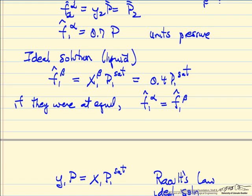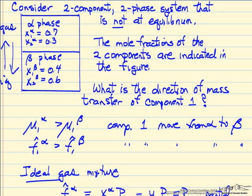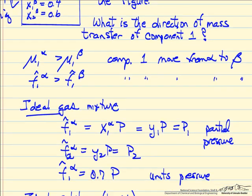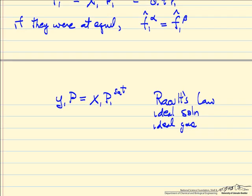In our system, mass transfer will occur — either component one moving from the beta phase to the alpha phase, or from alpha to beta — until equilibrium is reached as defined by Raoult's Law. Both x₁ and y₁ can change. We're doing this at fixed pressure and fixed temperature, which means P₁_sat is also a constant.